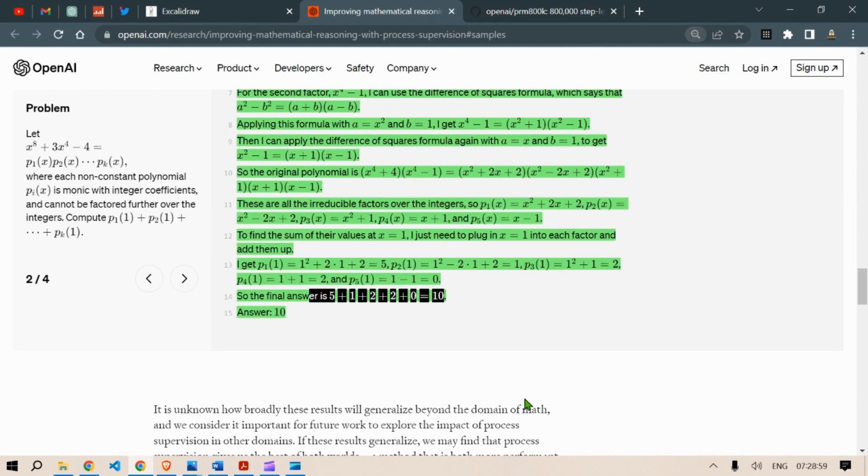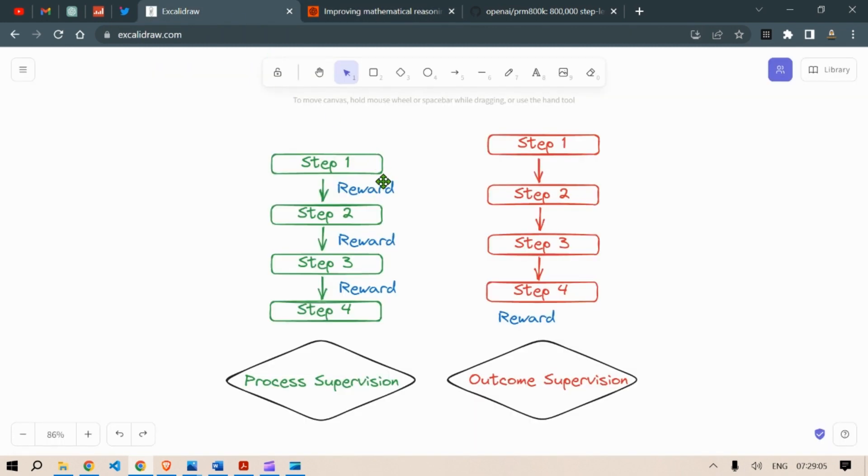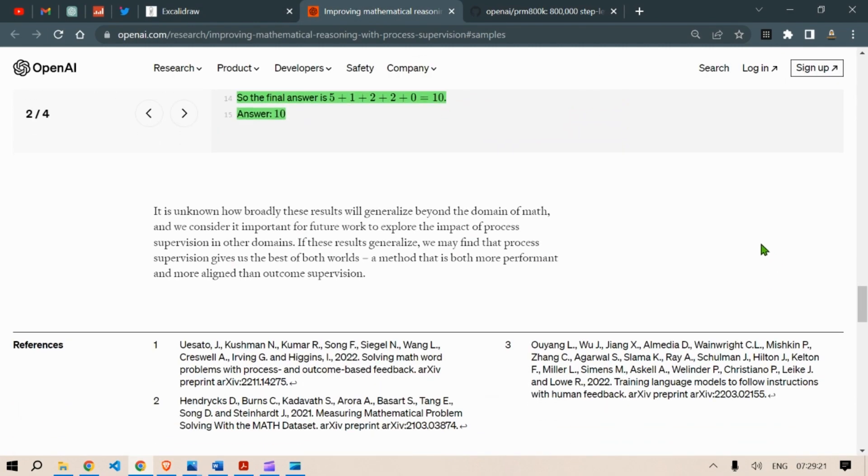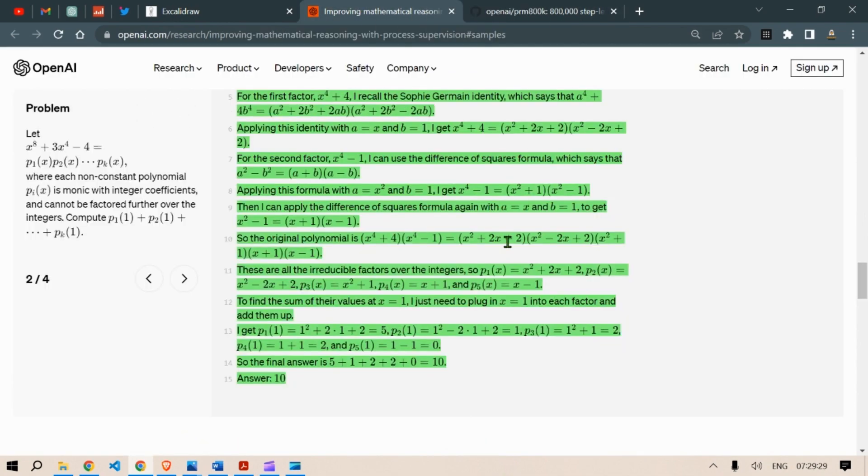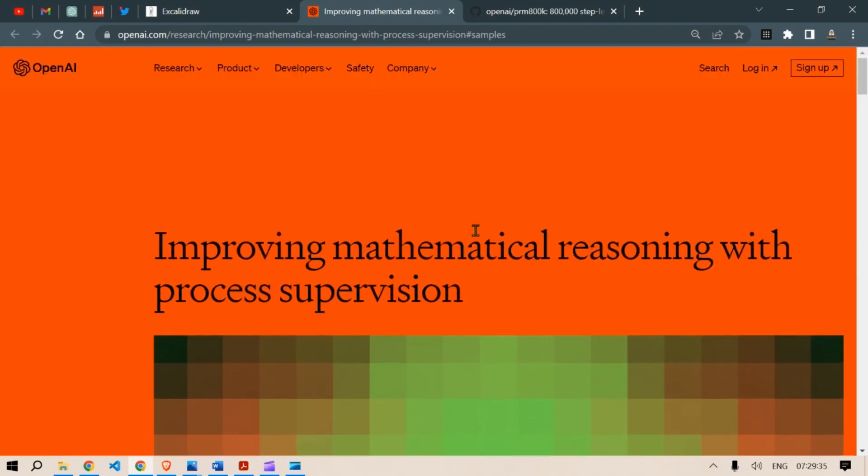So as you can see, such a complex math problem, it is able to solve when it thinks in step by step, and each step is rewarded. Both are using the chain of thoughts, the outcome supervision and the process supervision, but here the reward model is set up to reward each step. Now this opens the door for very good research, and they have even released the data set. So I urge you to start your research and publish some papers. If you like this video, subscribe to my channel and I will be back with another interesting video in the future. Till then, this is your host, Prompt Engineer, and have a nice day. Bye-bye.